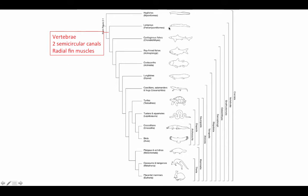Hagfish and lamprey are sometimes joined together in a group called cyclostomes, referring to the fact that they do not have jaws in their mouths. This is clearly an ancestral character — you had no jaws before you had jaws — and is not a basis for joining them together in a clade. But there are some similarities at the molecular level that suggest perhaps they should be together in a clade as the sister taxon to the rest of the vertebrates, rather than separated.